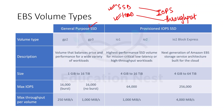When we talk about general purpose SSD, the balance is between price and performance. It ranges in size from 1 GB to 16 TB. These are the maximum IOPS that we can get and the maximum throughput per volume.